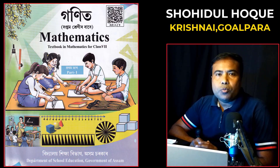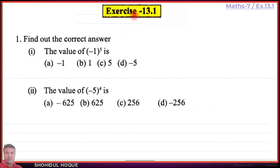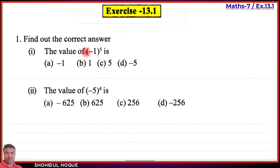Looyahissu Mathematics Class 7, new book, Exercise 13.1, English medium, question number one. Part number one: the value of minus one to the power five is — option A: minus one, option B: one, option C: five, option D: minus five. The correct answer is option A, minus one.